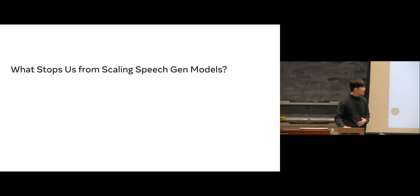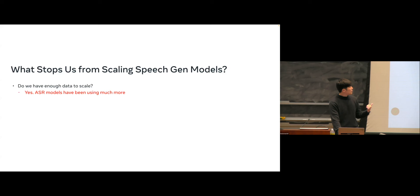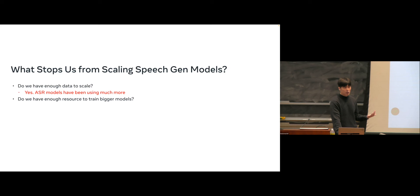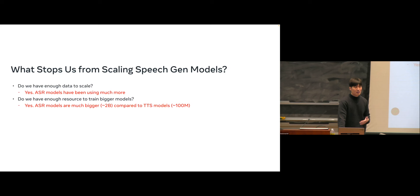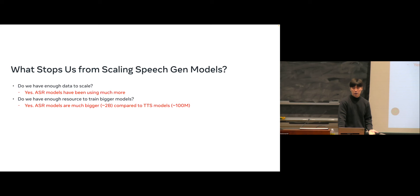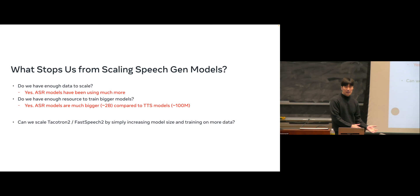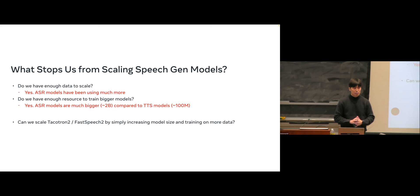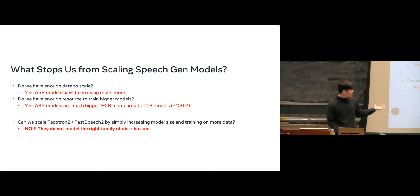Do we not have enough data to scale? No — ASR models have used more data than we use for speech generation. Is it compute? No — most TTS models are smaller, around 100 million parameters at most, while ASR models have been trained much larger, up to 2 billion parameters like USM. So can we just take Tacotron 2 or FastSpeech 2, increase model size, throw in more data, and hope it generalizes magically to in-the-wild data? The answer is no.